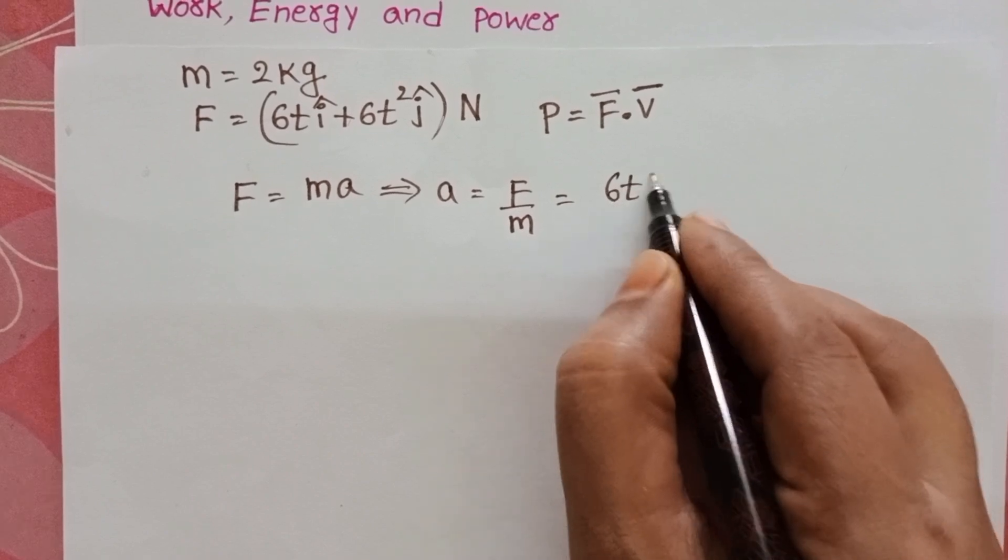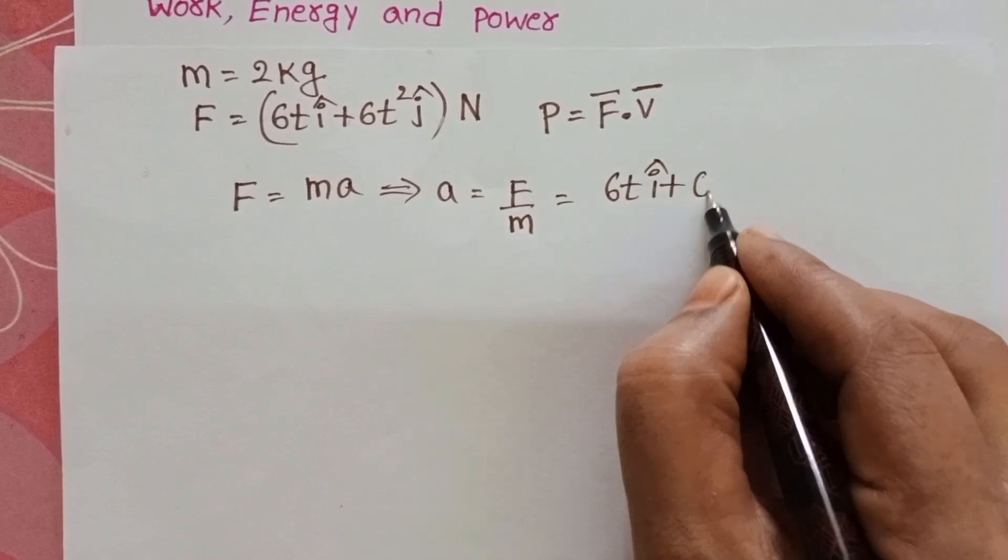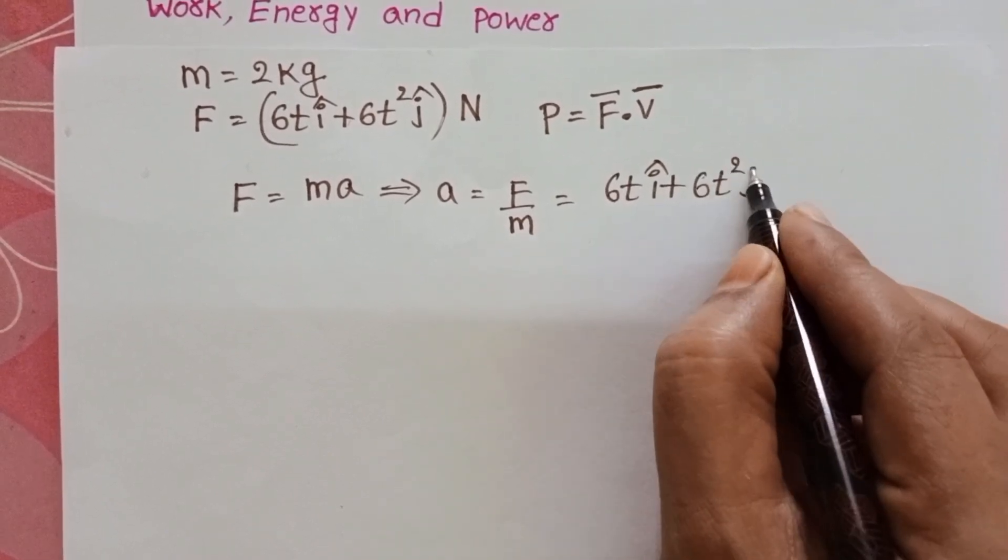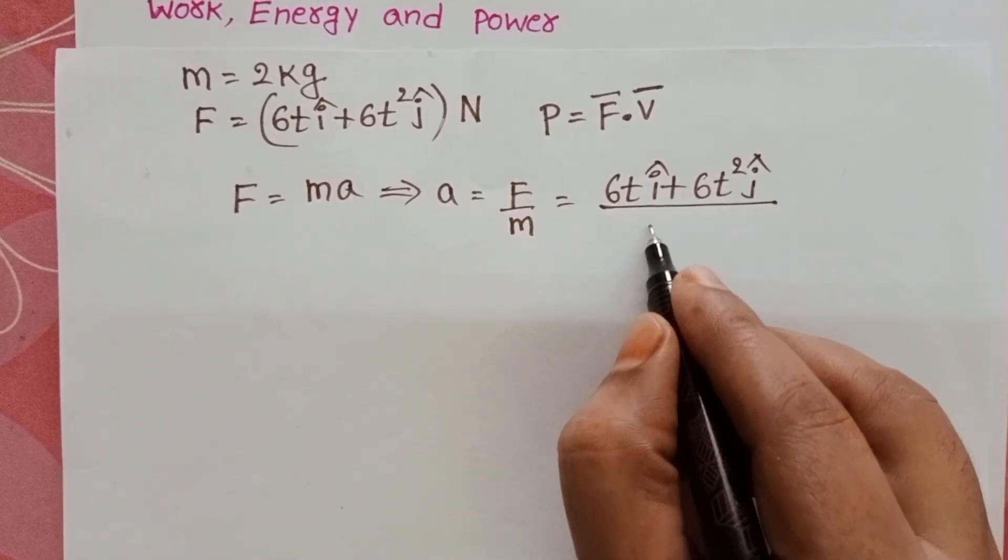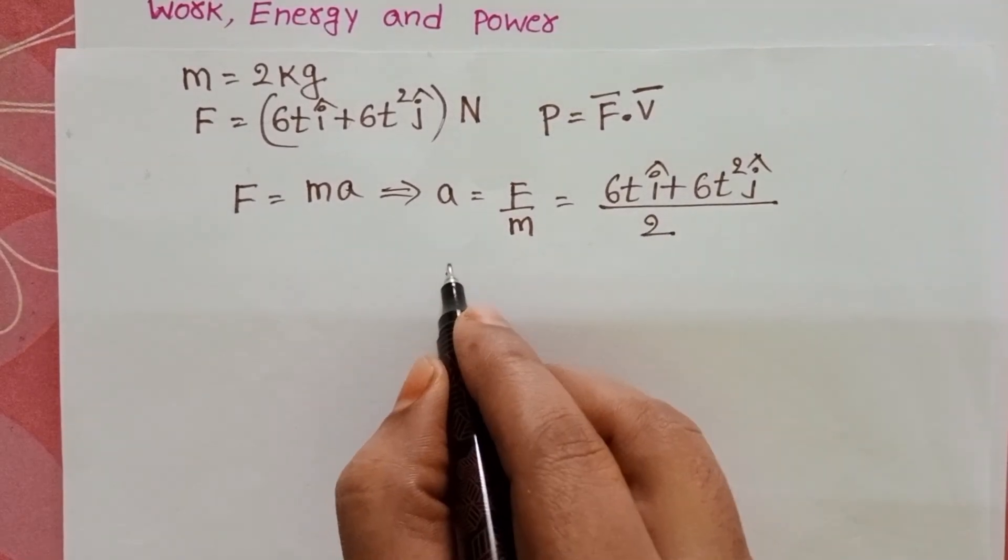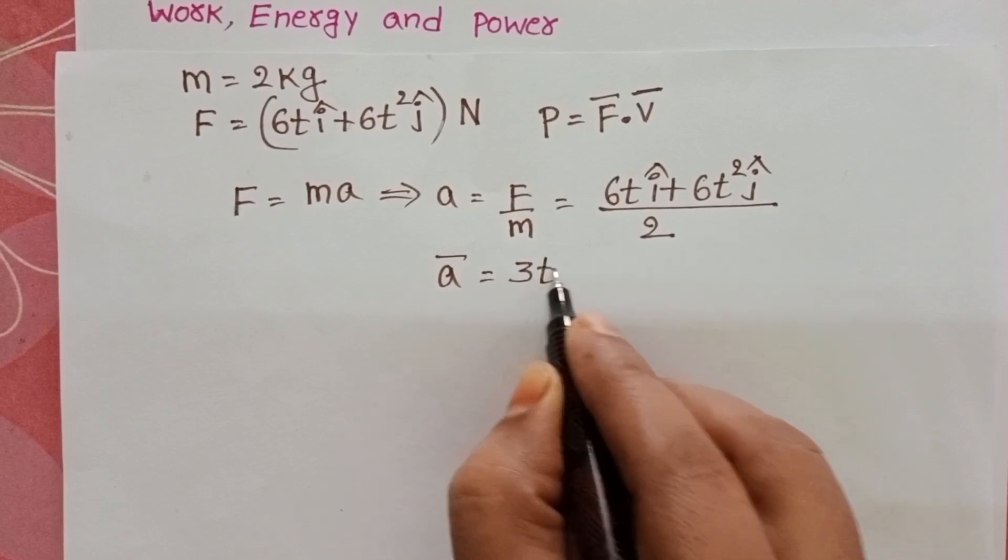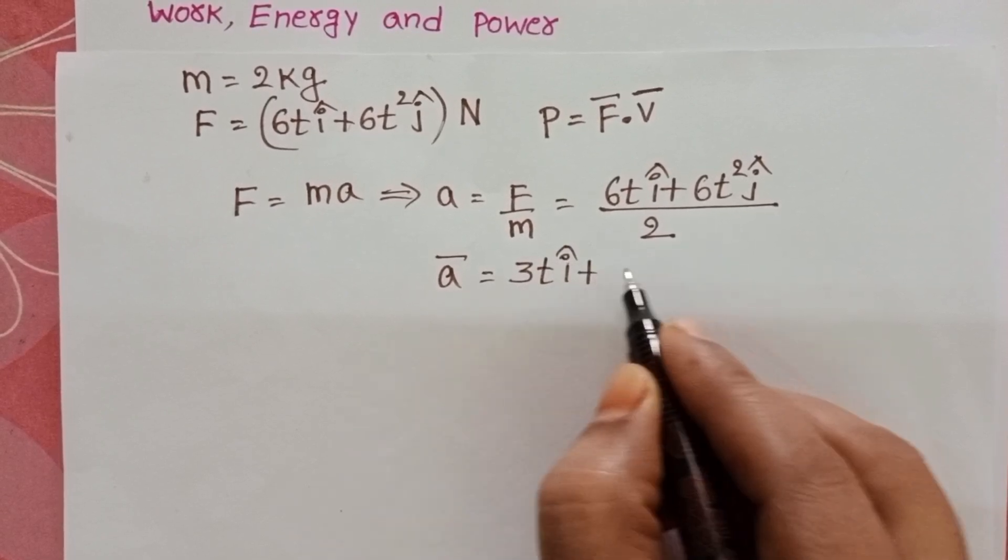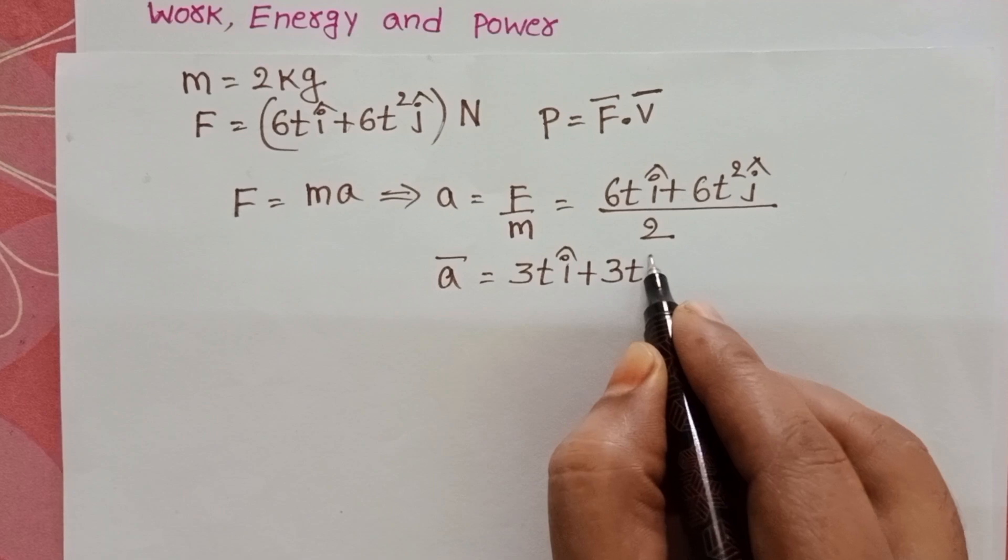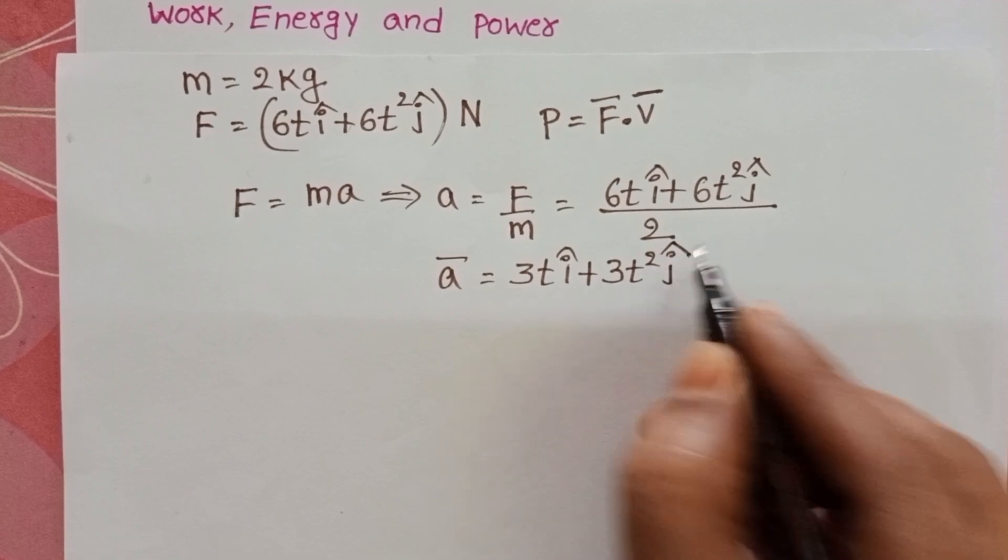6t î plus 6t² ĵ divided by the mass of the body, 2 kg. Then acceleration equals 3t î plus 3t² ĵ. This is the acceleration.